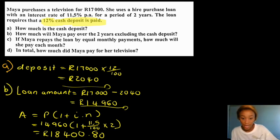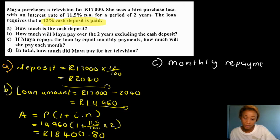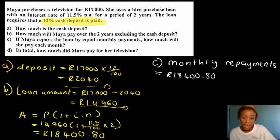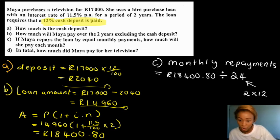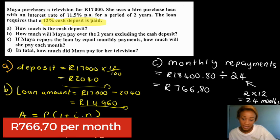Now for part C: if Maya repays the loan by equal monthly payments, how much will she pay each month? The monthly repayments equal 18,480 divided by 24. We get 24 because it's 2 years times 12 months. So the amount she will pay per month is 766.80 rands.